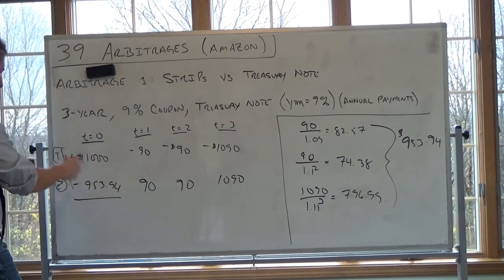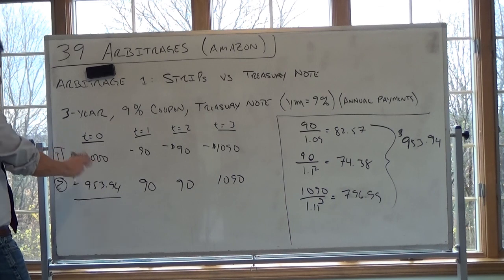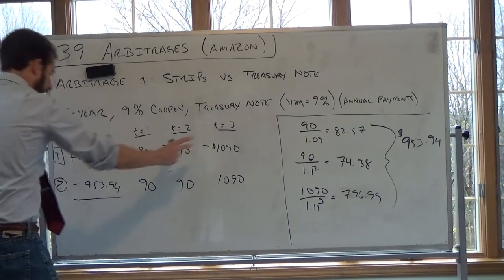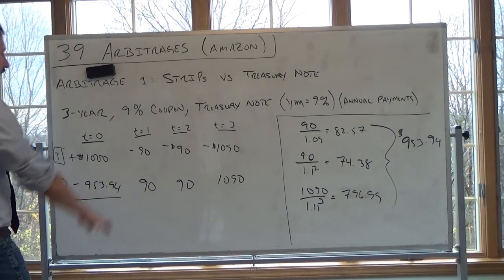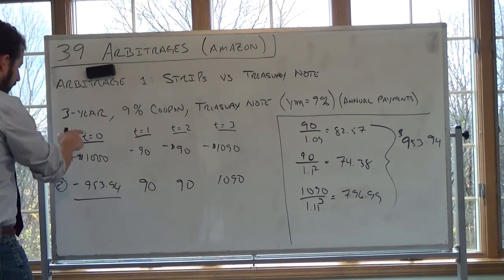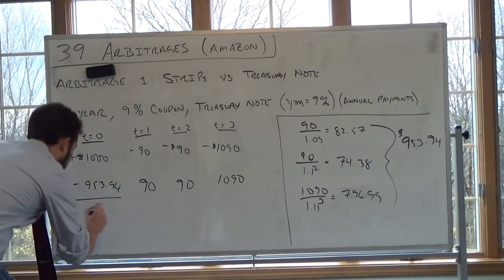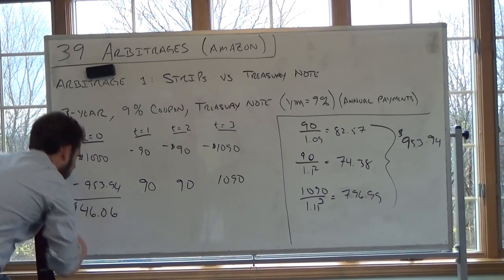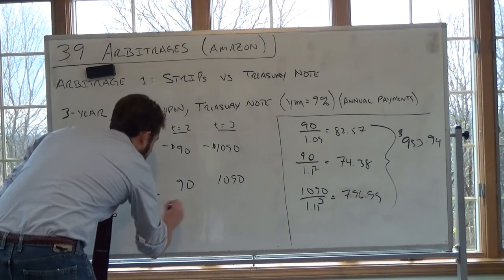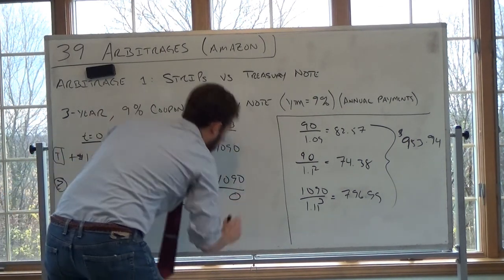So the idea here, this is the cash flows from shorting the treasury bond, this is the cash flows from buying the three zeros. So now I can net the two. $1,000 minus $953.94, what is this going to be, $46.06. And then these net zero, zero, zero.